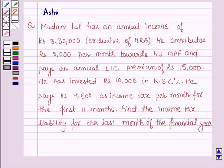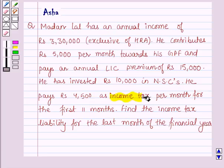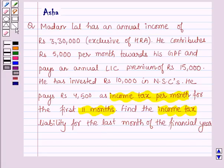Hello and welcome to the session. The given question says: Madan Lal has an annual income of rupees 3,30,000 exclusive of HRA. He contributes rupees 5,000 per month towards his GPF and pays an annual LIC premium of rupees 15,000. He has invested rupees 10,000 in NSCs. He pays rupees 4,500 as income tax per month for the first 11 months. Find the income tax liability for the last month of the financial year.